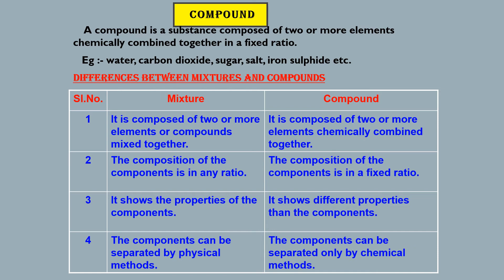A mixture is composed of two or more elements or compounds mixed together, whereas a compound is composed of two or more elements chemically combined together. In a mixture, the composition of components is in any ratio; in a compound, it is in a fixed ratio. A mixture shows the properties of its components, while a compound does not. In a mixture, components can be separated by physical methods; in a compound, only by chemical methods.